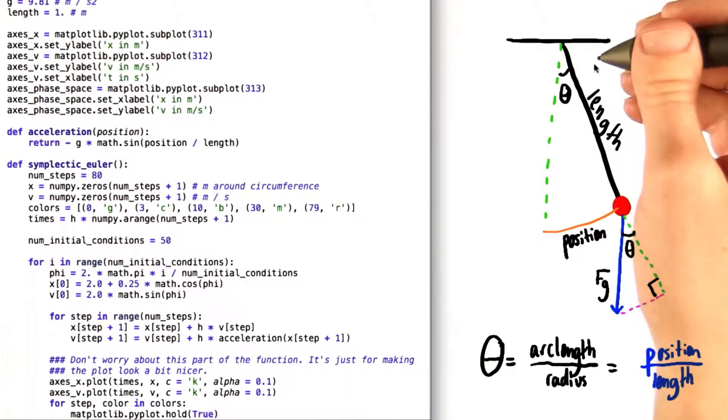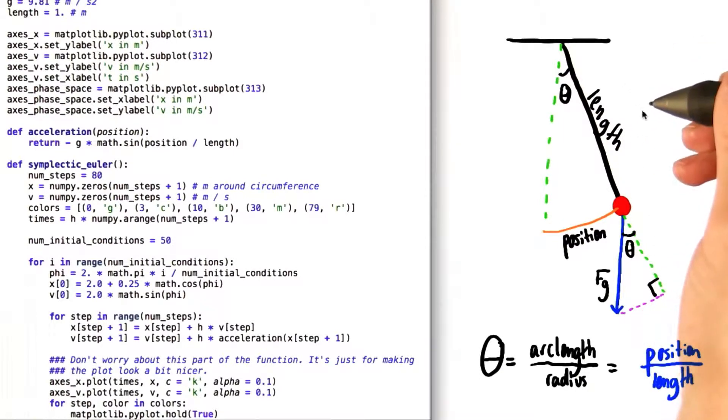Now theta down here is actually exactly equal to theta in the diagram of the pendulum itself. So that means to figure out the length of this component, we can use information that we already know about this larger diagram.